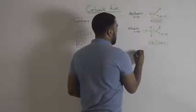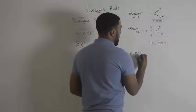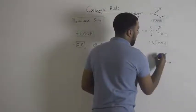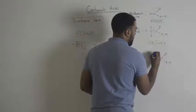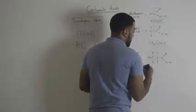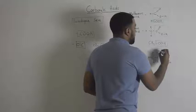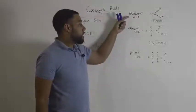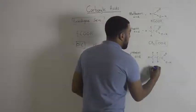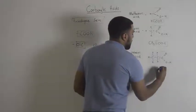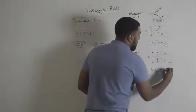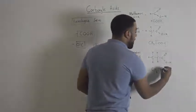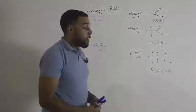The third and final carboxylic acid that you guys need to know is called propionic acid. Propionic acid has three carbons in its chain. The formula is CH3CH2COOH. Again you can see we have our carbon oxygen oxygen and hydrogen functional group.